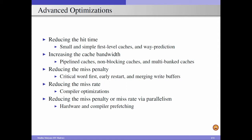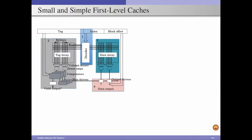We start with hit time reduction techniques. Cache consists of the tag array, data array, decoder, and a set of other components for performing read or write operations, supplying data to the processor. From the time the processor issues an address to the cache to the time the cache supplies the data, several components are involved, each consuming some time, and the overall time determines your hit time.